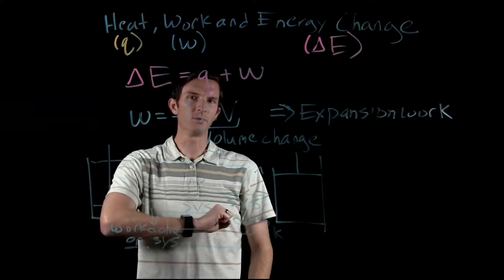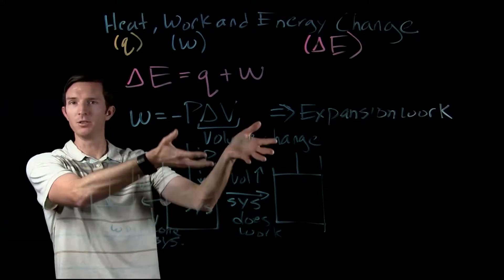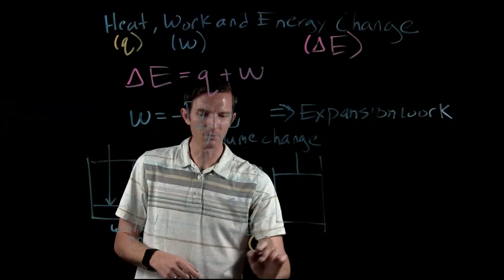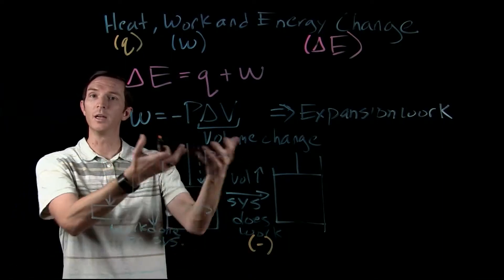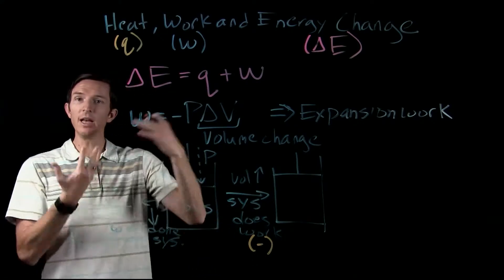If our system does work, well, if you're exerting energy to do work, you're having to give that energy away. So if our system does work, we can think about that as being a negative value. Our system is losing energy. If work's being done on our system, it's gaining energy. Somebody's doing work to it.